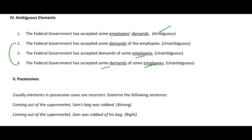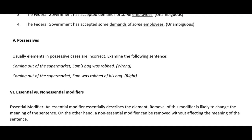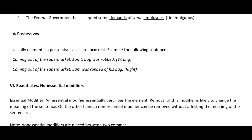Now possessives — these are somewhat related to dangling modifiers. Every time you see a possessive noun in options, mostly they are wrong options. But you need to check them carefully; don't simply eliminate just because it is a possessive case. Using the same example: 'Coming out of the supermarket, the bag was stolen' — I don't understand how the bag was coming out of the supermarket. So this is a wrong sentence. But in the correct version, a person is present — the missing element is supplied.